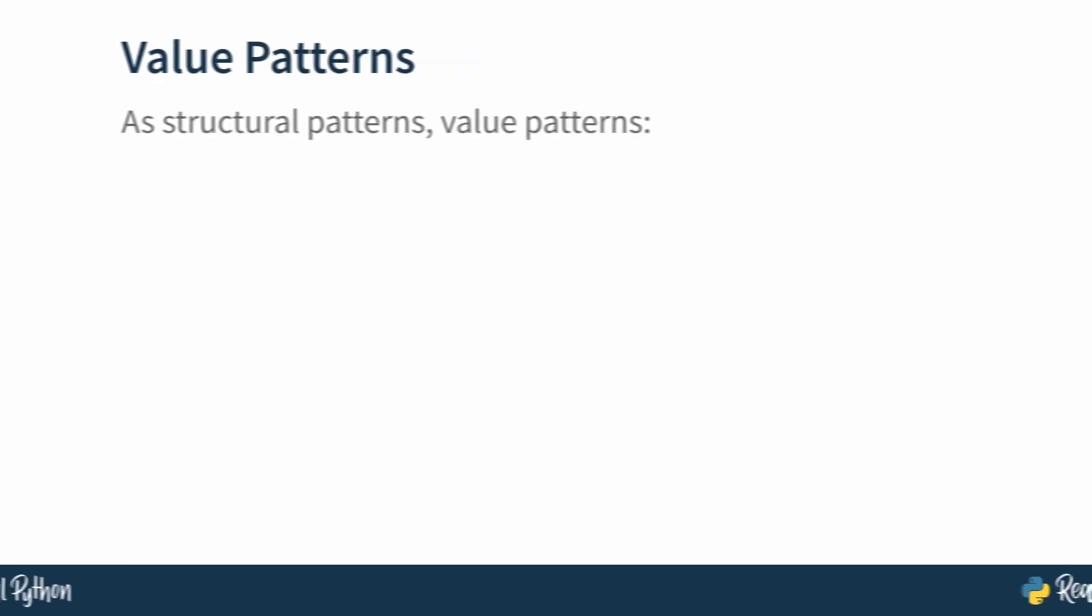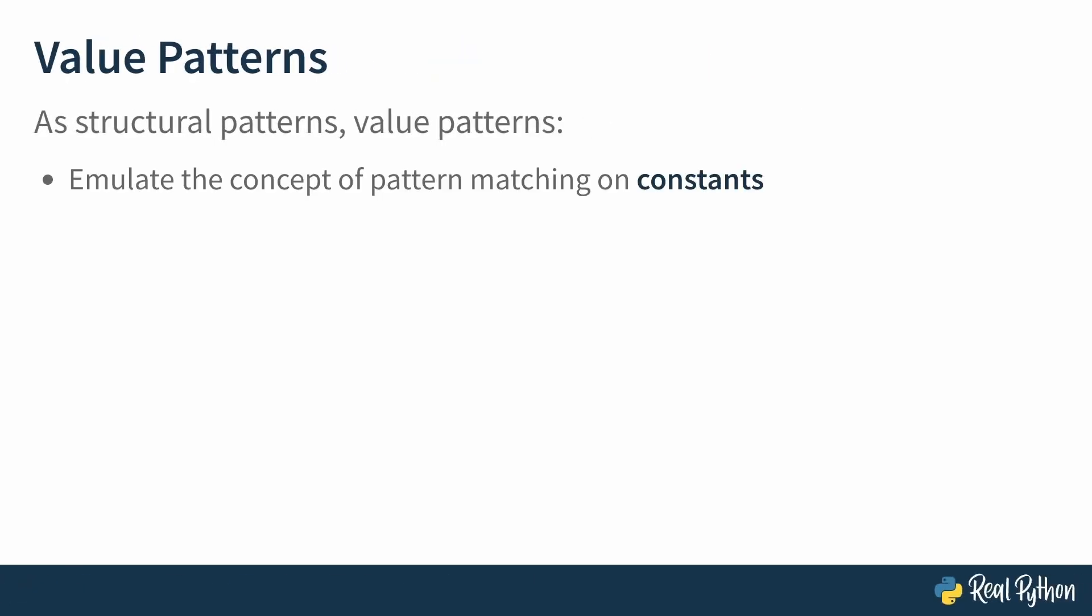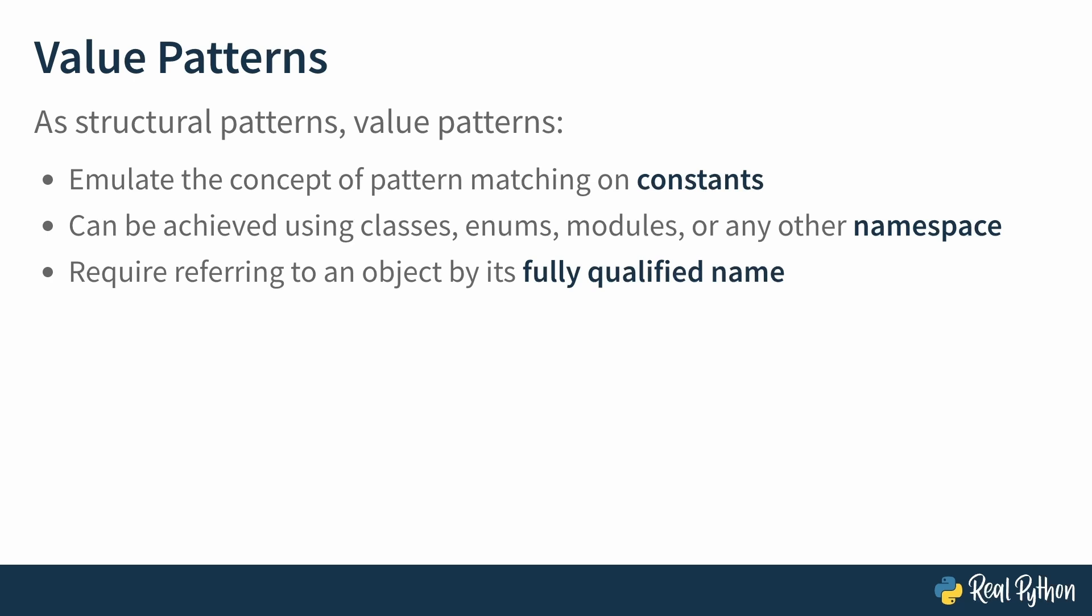Matching by equality is equivalent to using the equality test operator, the double equals sign, whereas matching by identity is done using the Python keyword is. This is a subtle distinction, but it's one to be aware of. Next up are value patterns. As structural patterns, value patterns emulate the concept of pattern matching on constants. As developers, we typically try to avoid hard coding literals throughout our programs. Instead, we prefer to define constants separately from the logic in our code. But if you wish to match against constant values using structural pattern matching, you have to do things a little bit differently. Your constant values must be enclosed within a namespace. This can be something like a class, enum, or module, for example. Once your constant is so enclosed, you must refer to it by its fully qualified name using at least one dot accessor. And this is really important. If you aren't accessing the constant by its fully qualified name, you'll actually be creating a capture pattern instead, which is something entirely different. You'll see capture patterns more in the next lesson.